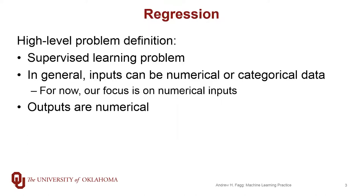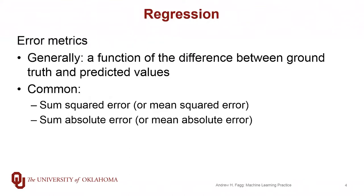As we get further into things like decision trees and, in particular, regression trees, we'll be able to work both with numerical and categorical data. The outputs are also numerical, and generally we're thinking of these outputs in terms of being continuous values. On the error metric side, error metrics are some sort of a function of the difference between the ground truth from a training data set and the values that we're predicting. We've already talked about squared error or mean squared error, but another common choice is mean absolute error.